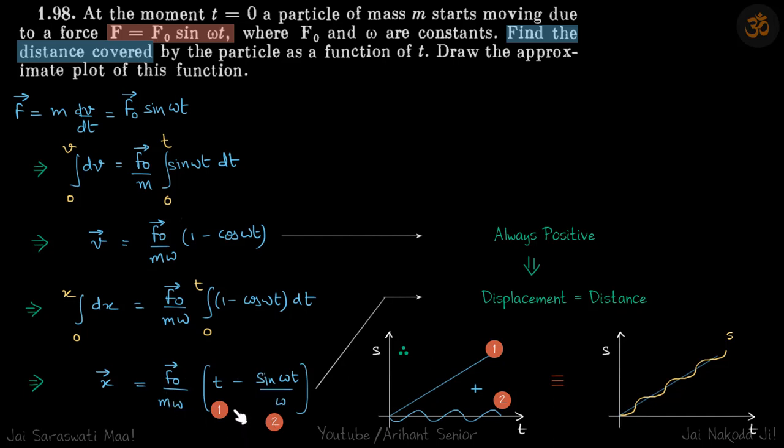So how we'll plot this—let's plot them individually. This is t, which is a straight line, and then we have sin(ωt)/ω that goes like this. This has a minus sign, so that's why it goes down first, then comes up and goes like this.